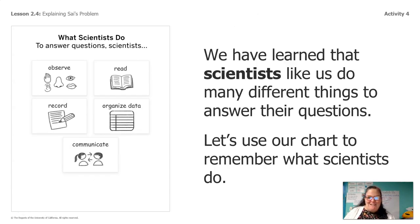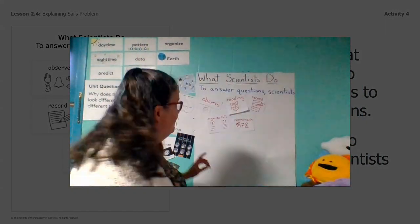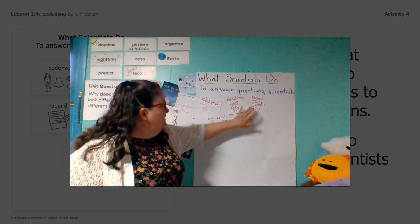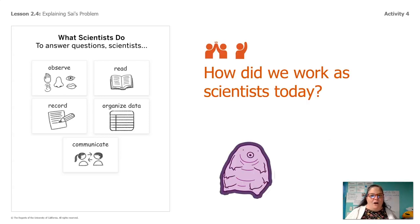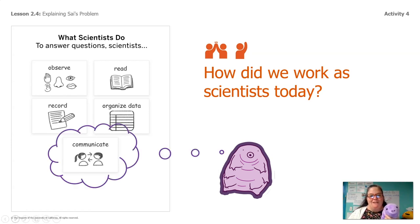Let's look at our chart one more time and remember what scientists do. Scientists observe, they read, they record, they organize data, and they communicate. Of all these things that scientists do, which one do you think we did today? What did we do the most of? Communicate! We communicated by talking to each other and we communicated by writing that letter to Psy.